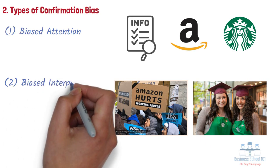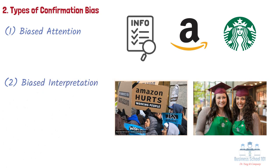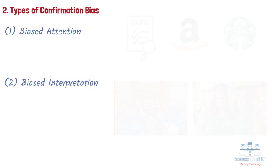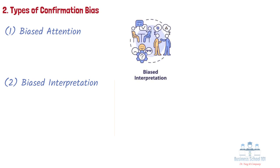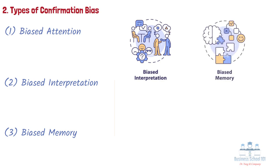Second, biased interpretation. Confirmation bias can be observed when consumers consciously interpret information in a way that confirms their beliefs. For example, consumers tend to interpret inconclusive evidence or messages that support their current points of view accordingly. Third, biased memory. This bias occurs when consumers selectively remember information that supports their attitudes while forgetting information that doesn't.